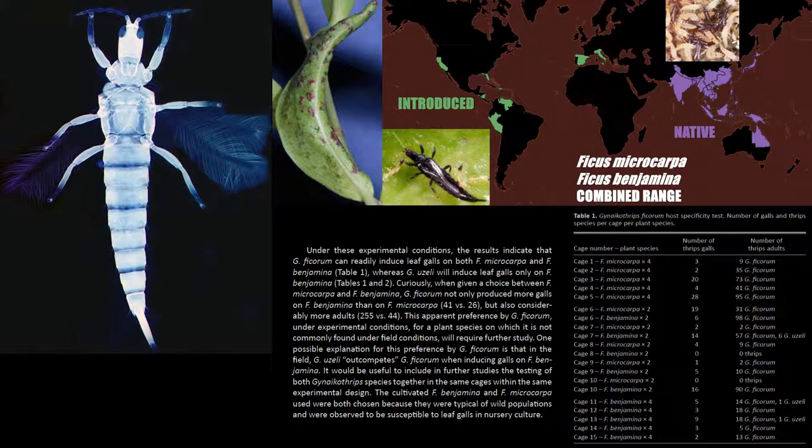Interestingly, within their galls, both the related species Gynicothrips uzeli as well as Mesothrips jordani and Leothrips takahashii have been found, in addition to many other insects with similar proclivities for shelter. These inquiline species make quick host plant specific diagnosis impossible, necessitating identification.